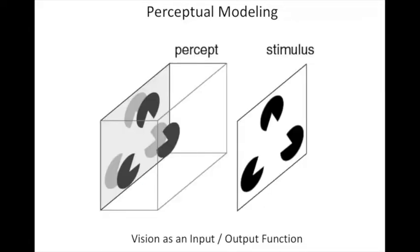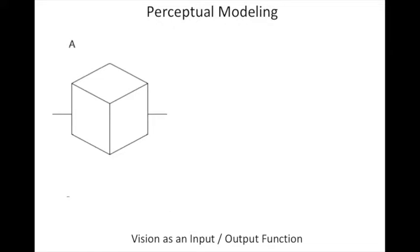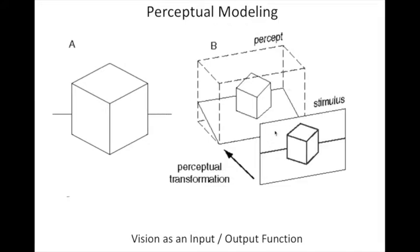We can circumvent the thorny philosophical issue by modeling perception as an input-output function, where the stimulus is a two-dimensional image which is then projected into three-dimensional space, where perceptual processes find the most simple interpretation of the stimulus. Here is an example of what looks like a cubic box in a corner—here is the stimulus as a two-dimensional image. It is projected into the perceptual space where it is fleshed out as a volumetric image. This is the perceptual transformation from 2D to 3D vision as an input-output function.